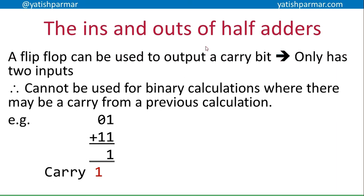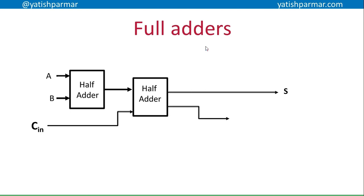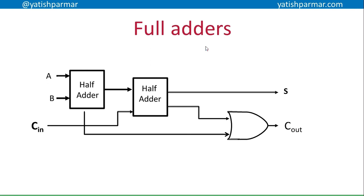A half adder is useful but it only does half the job. Half and a half equals one - and that's exactly it: a full adder takes two half adders and joins them together. The output from the first half adder goes into a second half adder, and the carry-in also goes into that second half adder. You add the two numbers first, then add the carry to the result. The carry from the second half adder and the carry from the first half adder go into an OR gate, giving you the carry-out to propagate forward.